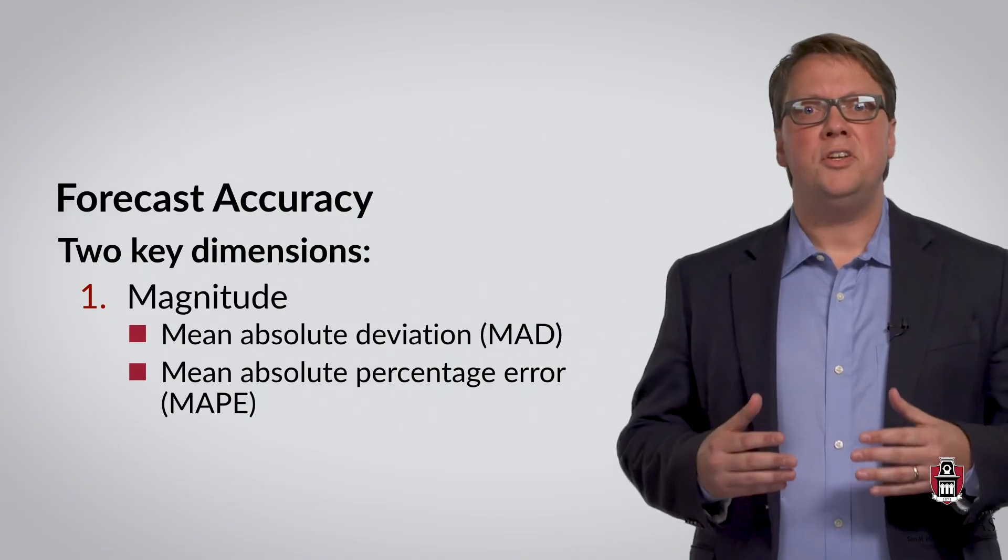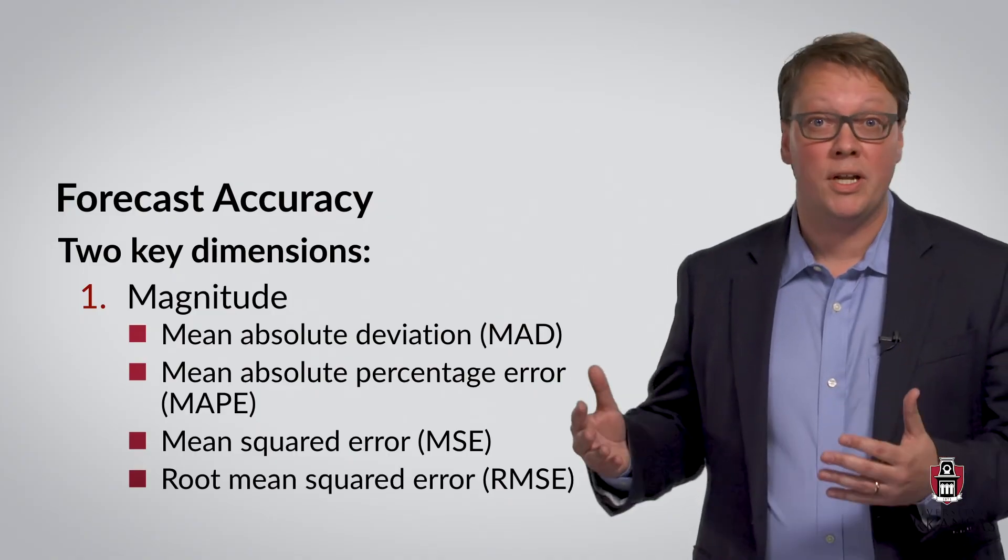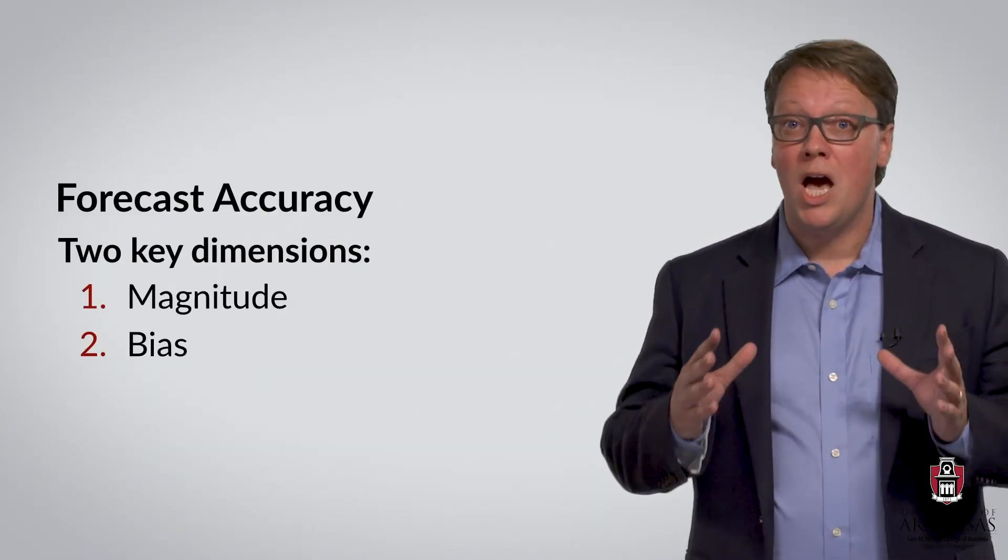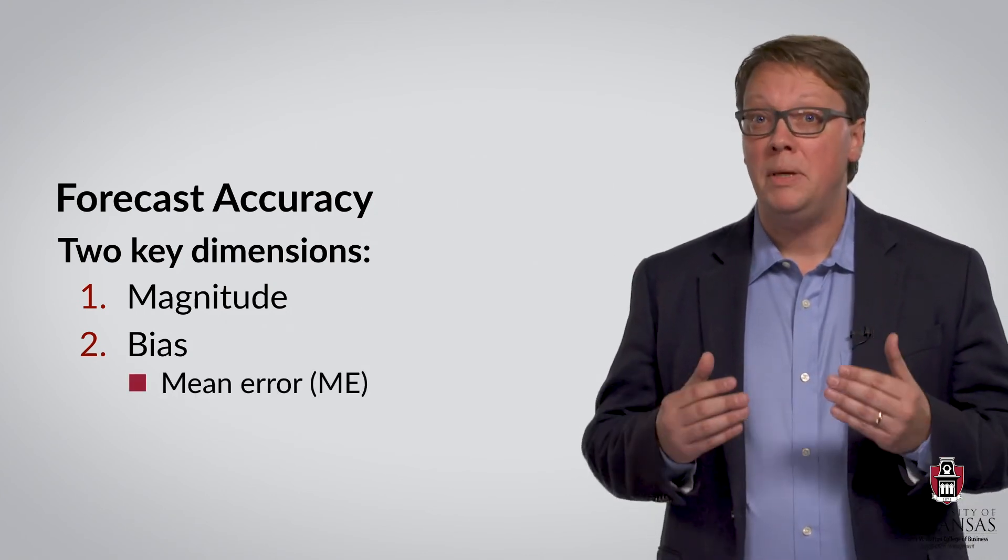And then there are additional metrics, such as the mean squared error or the root mean squared error. In terms of bias, our primary measure of forecast accuracy will be the mean error.